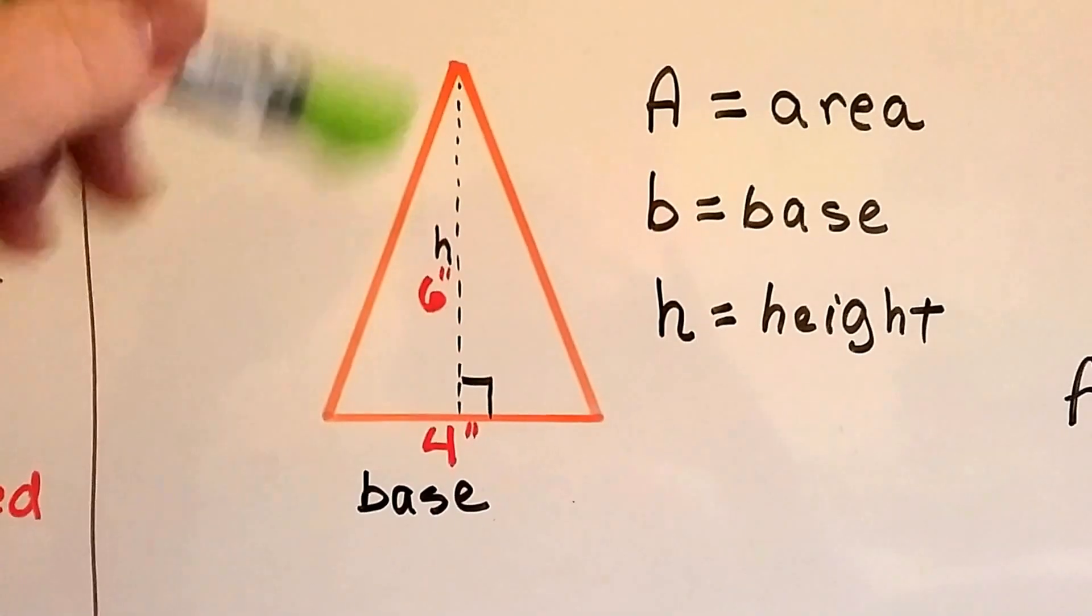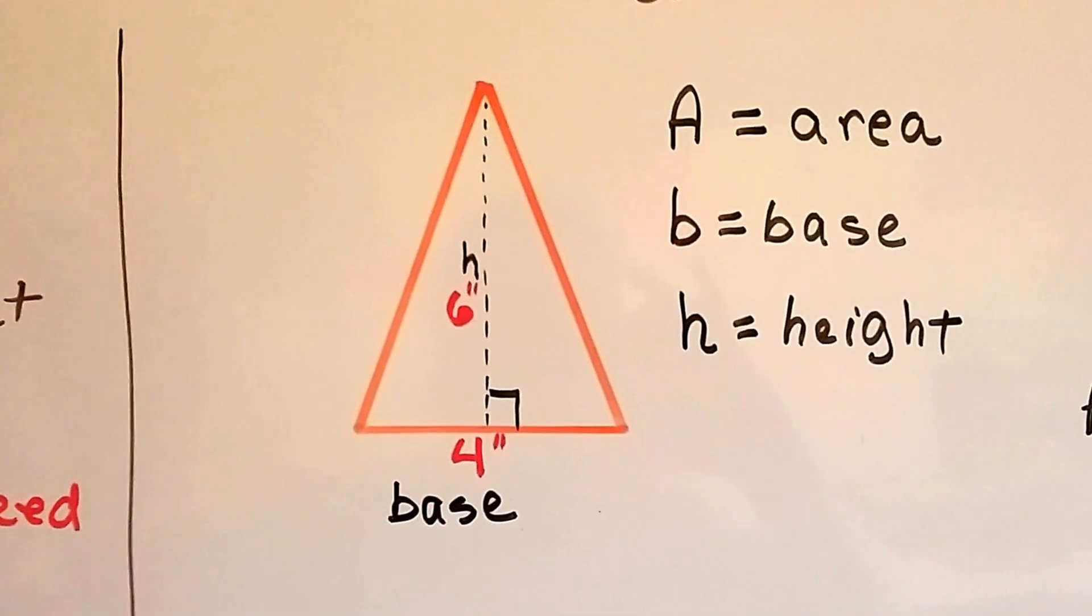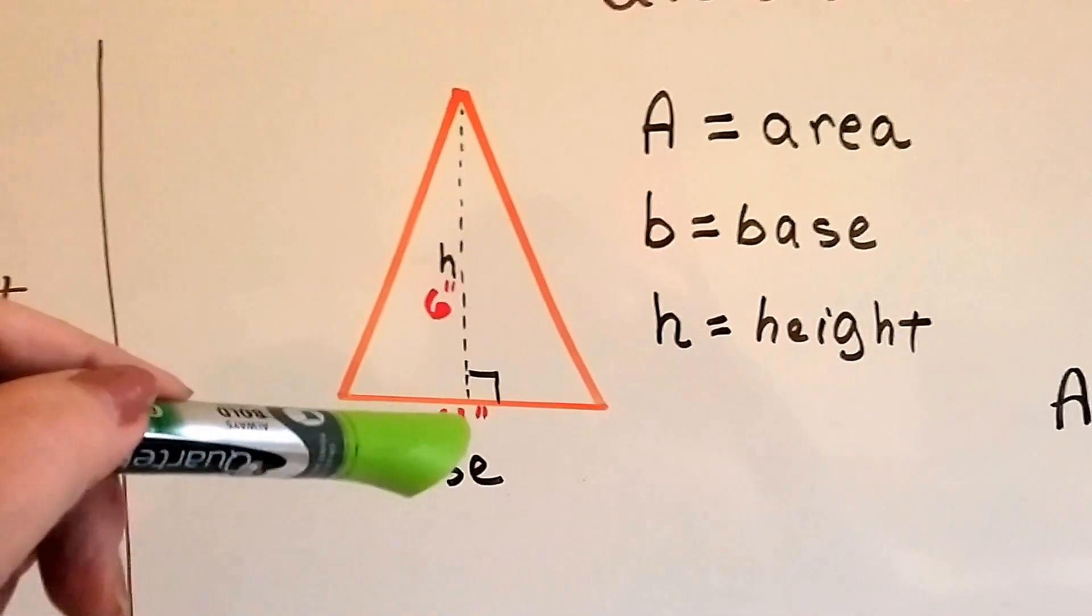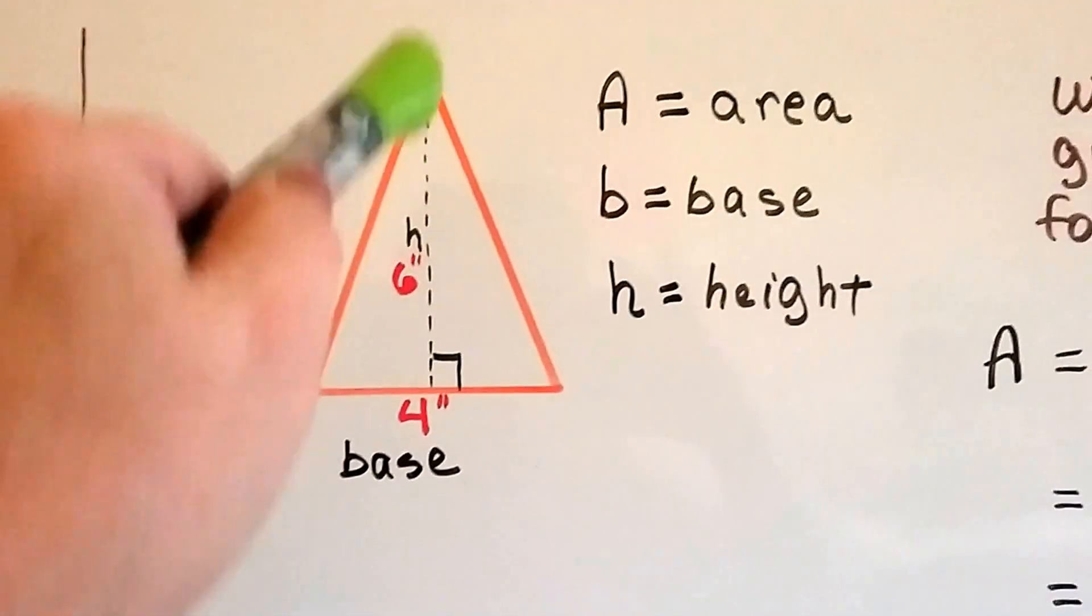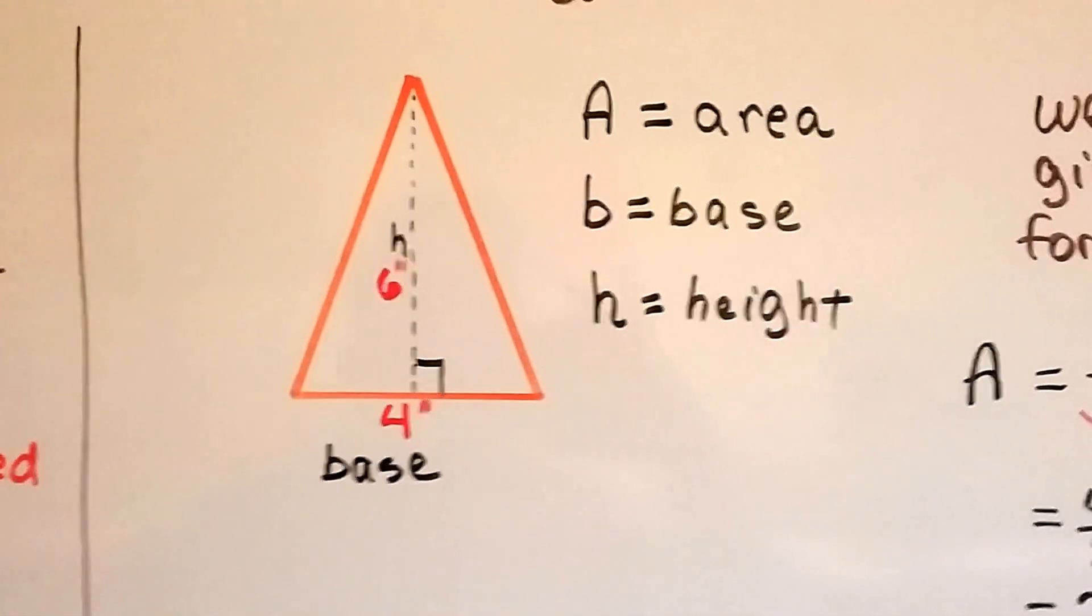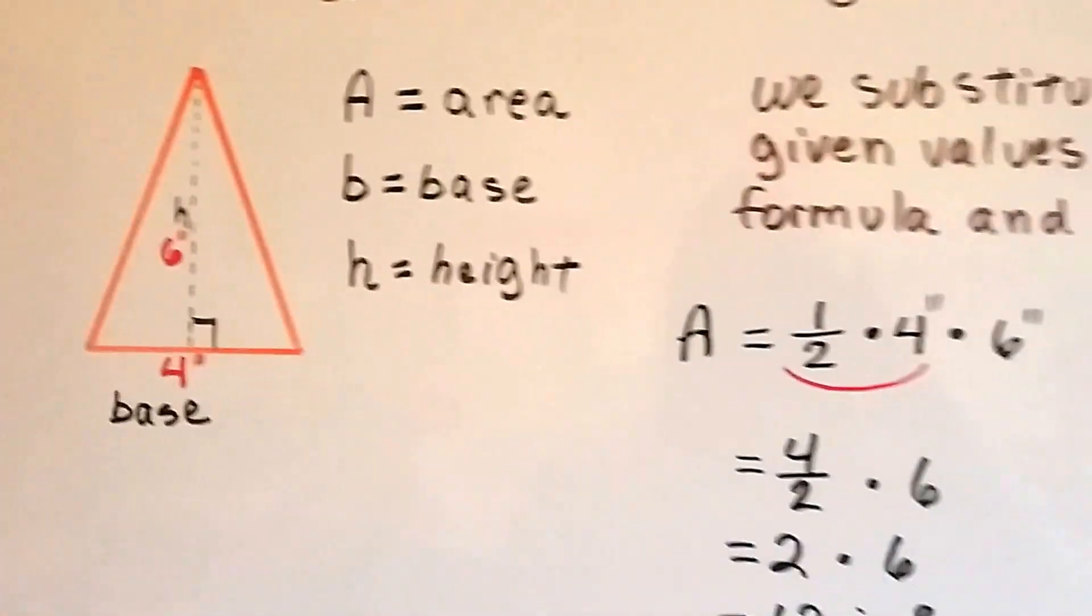It's not this, that's the slant height. That's completely different, we do that in geometry. The true height is perpendicular to the base, like a T. So the height is 6 inches. We just take that 4 inches and 6 inches and we plug it into the formula.